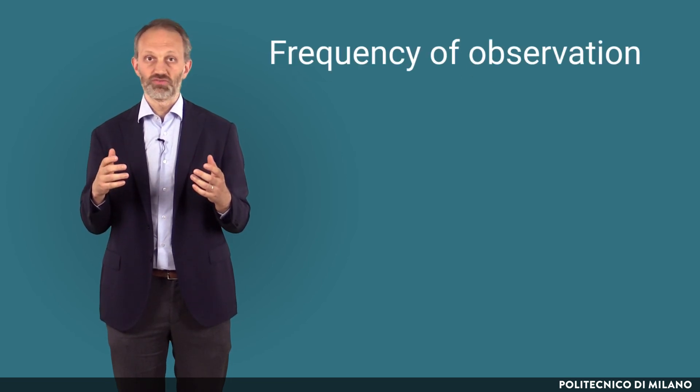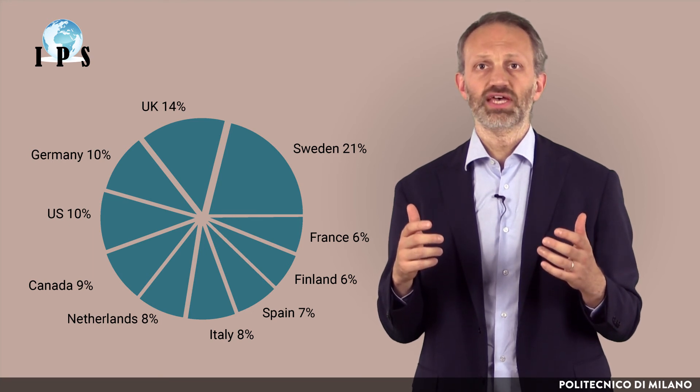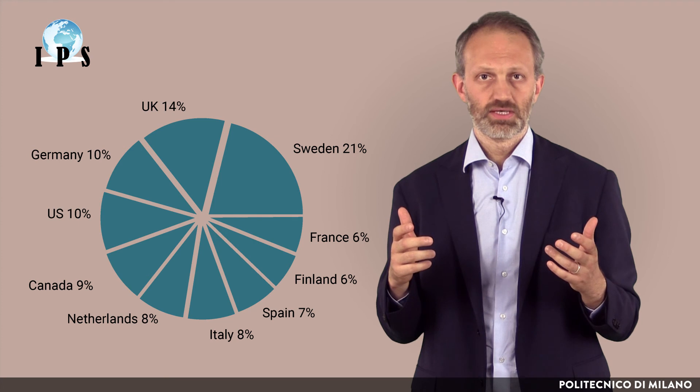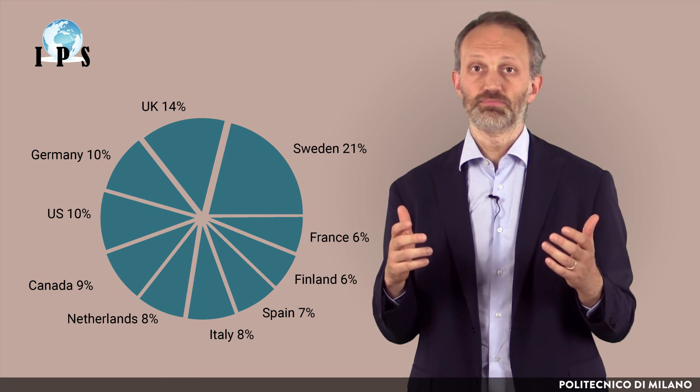The univariate statistics we have seen so far can be used with both continuous and discrete data, that are data measured through interval or ratio scales. If data are measured through nominal or ordinal scales, the concepts of central tendency and dispersion do not apply; rather, we can calculate the frequency of observation of each value. In this example of descriptive statistics for a nominal scale, we see the distribution of the IPS sample in the various countries. We count the frequency of observation of each category and calculate the related percentages.